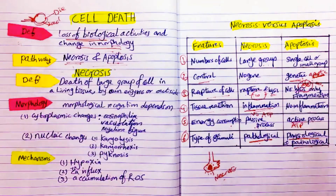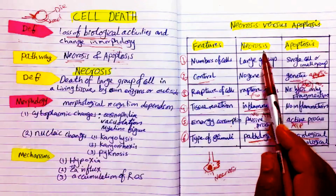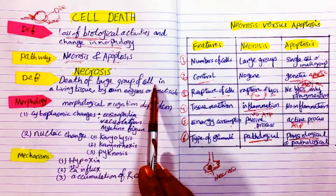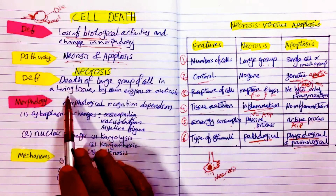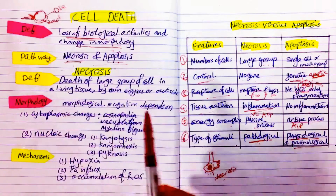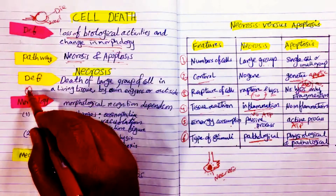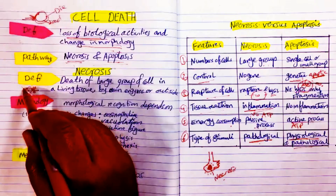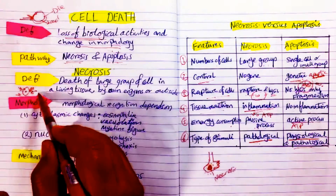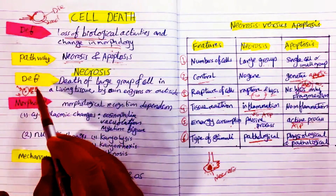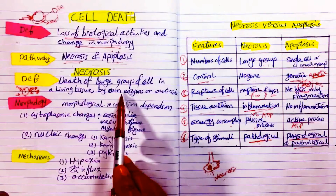What is the definition of necrosis? Necrosis is a cell death pathway meaning death of a large group of cells in a living tissue — while the surrounding tissue is still living, the necrotic area is dead tissue. This death occurs by autolysis, using their own enzymes, or hydrolysis, using enzymes from outside such as from inflammatory cells like neutrophils, eosinophils, lymphocytes, or macrophages.